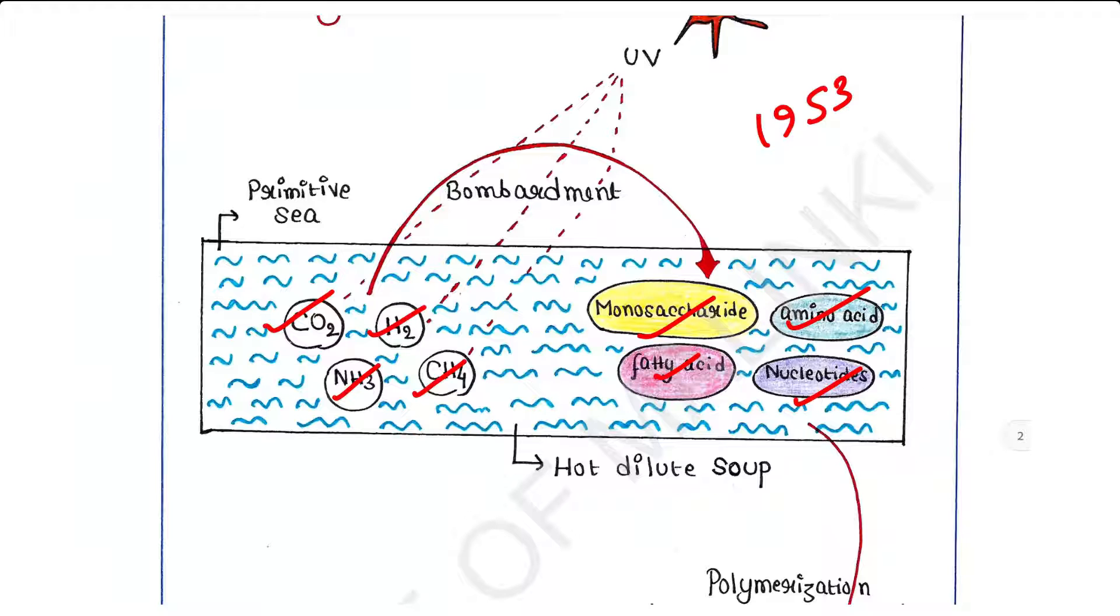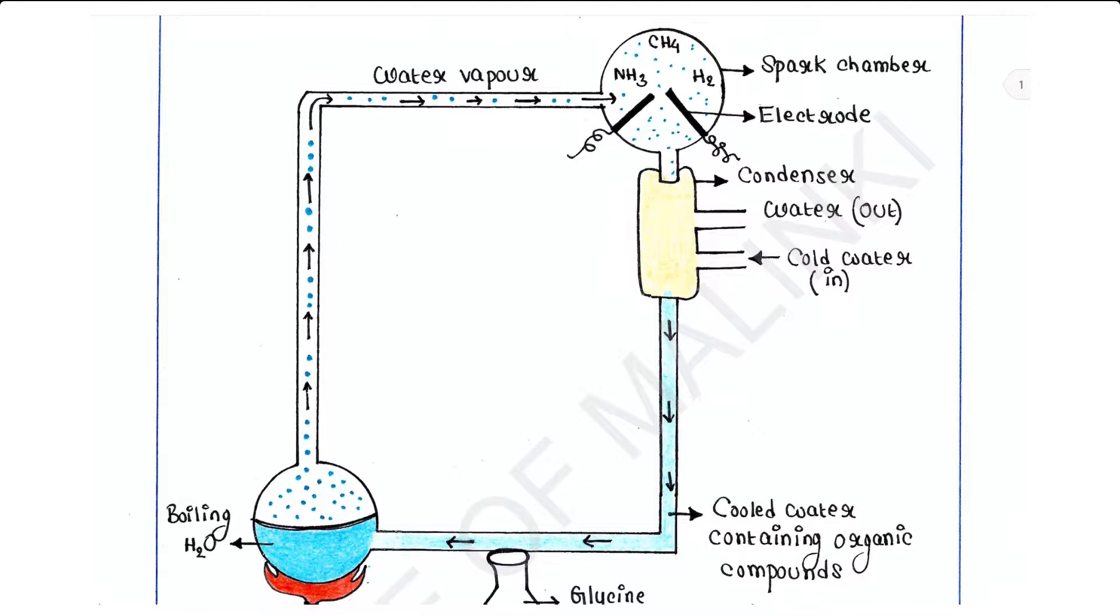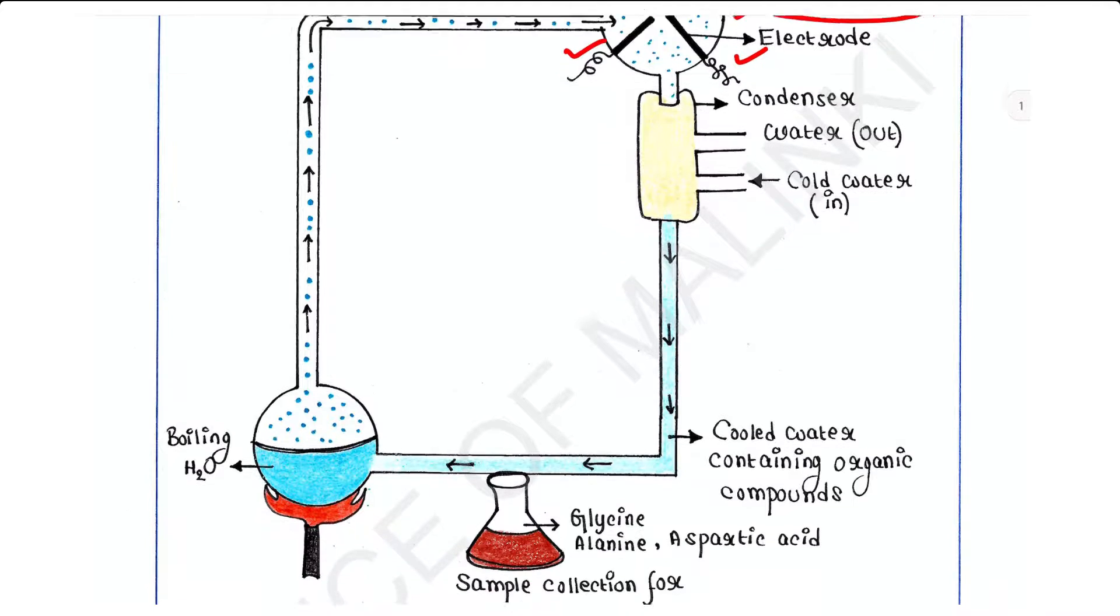So we will see what they have done. They have used a closed flask—that is the spark chamber you can see here—which contains two electrodes. So start from here: they have used water and applied heat to boil that water.